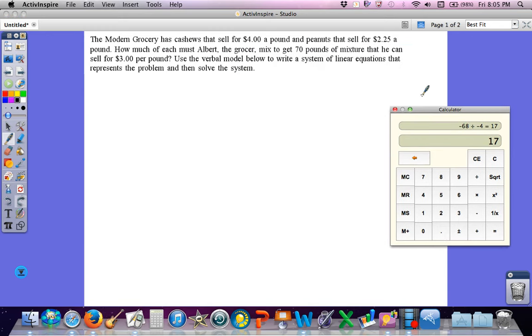Okay, and this one gets a little bit more complicated. The modern grocery has cashews that sell for $4 a pound and peanuts that sell for $2.25 a pound. How much of each must Albert the grocer mix to get 70 pounds of a mixture he can sell for $3? So let's first talk about the quantity. I'm going to use C for cashews and P for peanuts to help me keep this straight. So the number of pounds of cashews and the number of pounds of peanuts has to equal 70. That is my quantity equation.